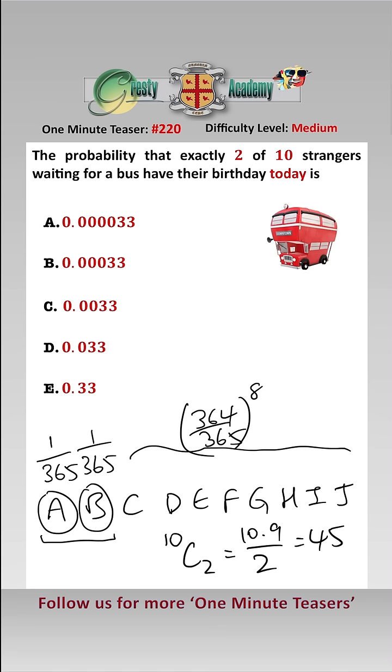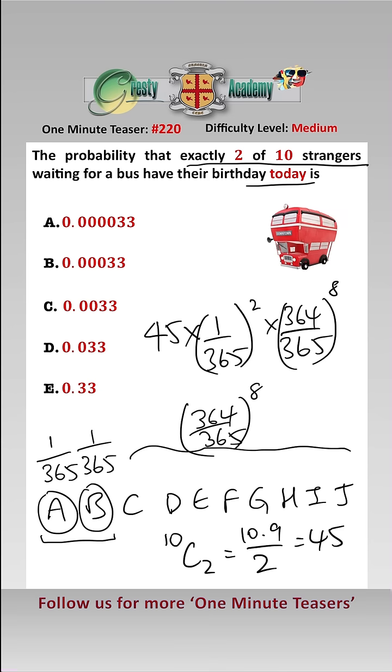Which is 45. So therefore, the probability that exactly 2 of 10 strangers have their birthday today is 45 times 1 over 365 squared times 364 over 365 to the 8. Using a calculator, that gives us 0.00033.